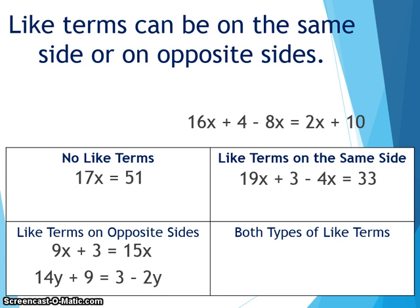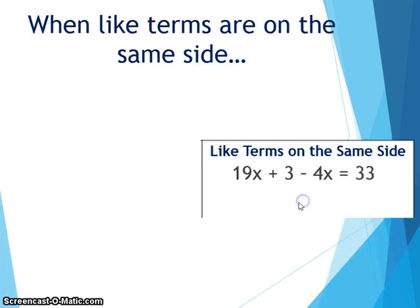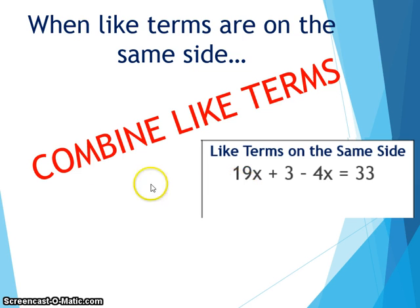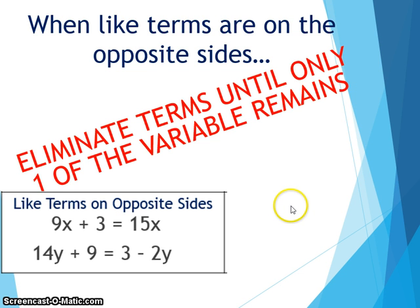In our last example, if we identify like terms we have 16x, negative 8x, and positive 2x. Two of these are on the same side but opposite to the third, making it like terms on opposite sides as well. So this equation has both types of like terms. When like terms are on the same side, we combine them — for example, 19x minus 4x makes 15x. What we're learning today is when like terms are on opposite sides, we eliminate terms until only one of the variable remains.